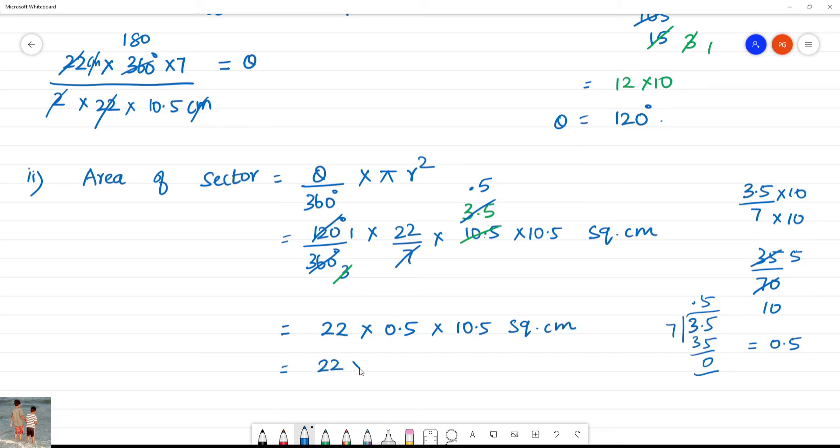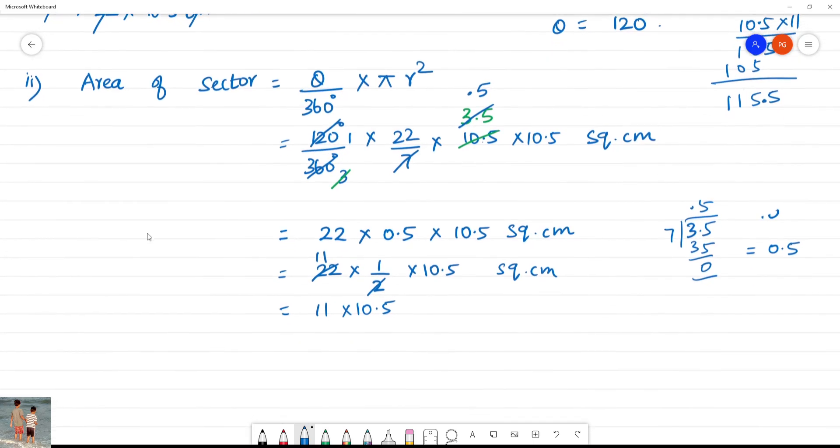22 multiplied by 0.5 is 11. So 11 times 10.5 square centimeter. What is 10.5 into 11? This is 115.5, that is equal to 115.5 square centimeter.